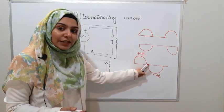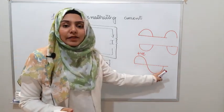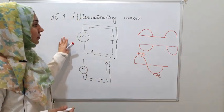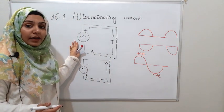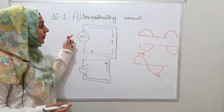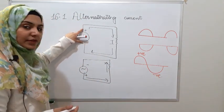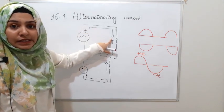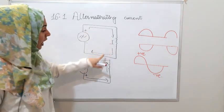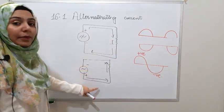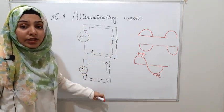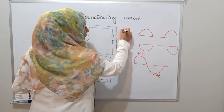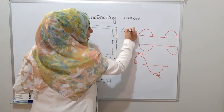In the waveform, the polarity changes: positive half cycle, then negative half cycle, then positive, then negative. According to the circuit, the voltage difference is present and the current flows accordingly. We can call this alternating current or alternating voltage.